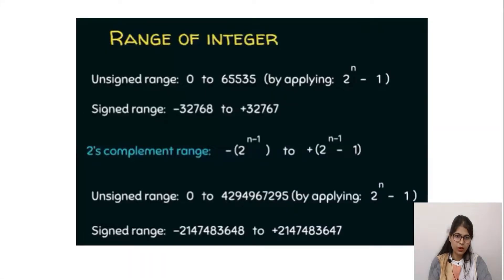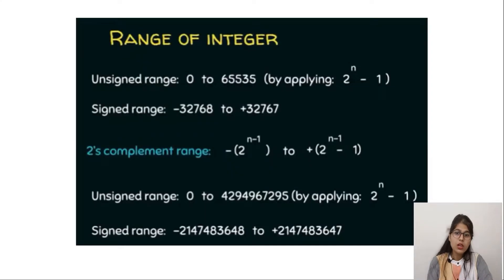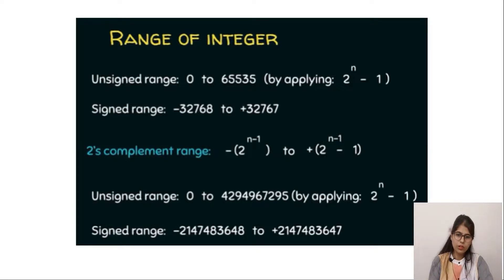As you all are aware, there are many data types available in C programming such as integer, float, and variations of integer and float. We also have the character data type and boolean. We will be solving questions on each of them one by one. First of all, let's discuss the range of the data types.